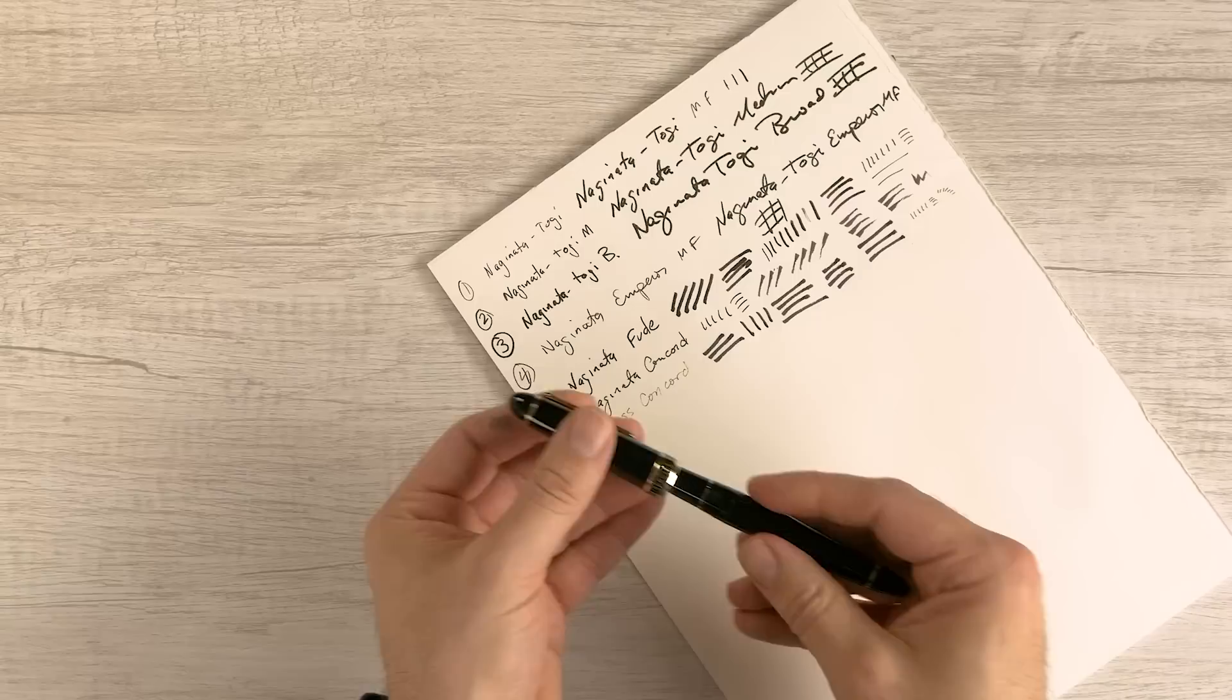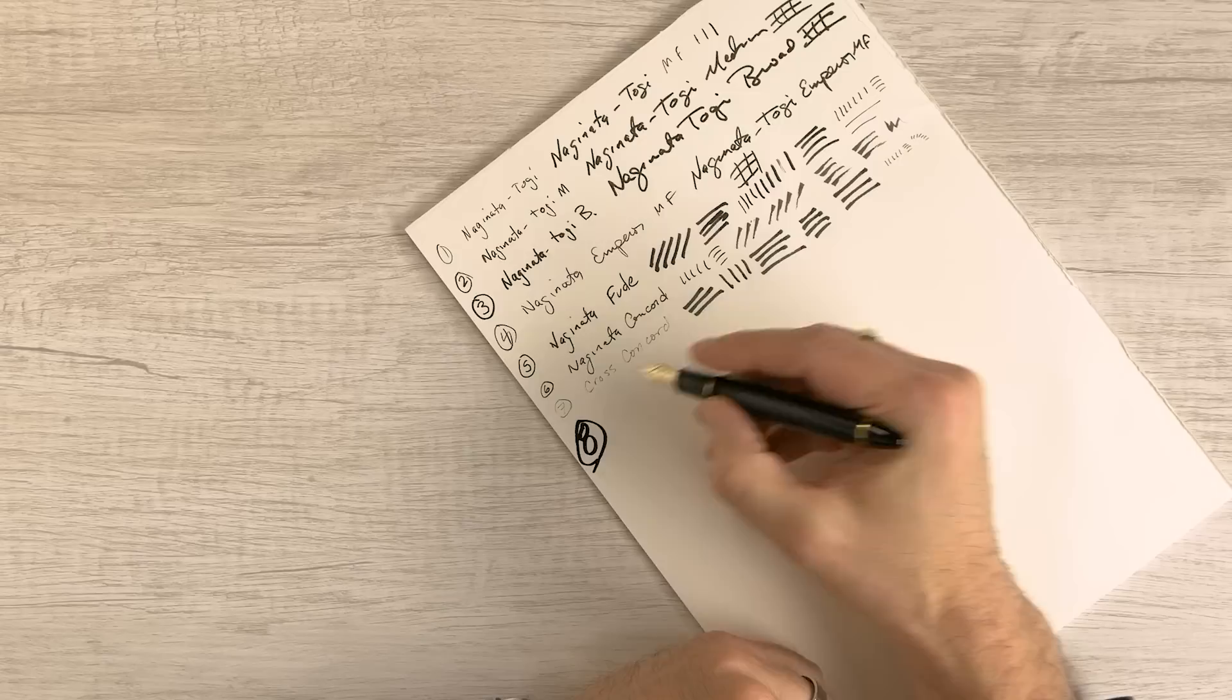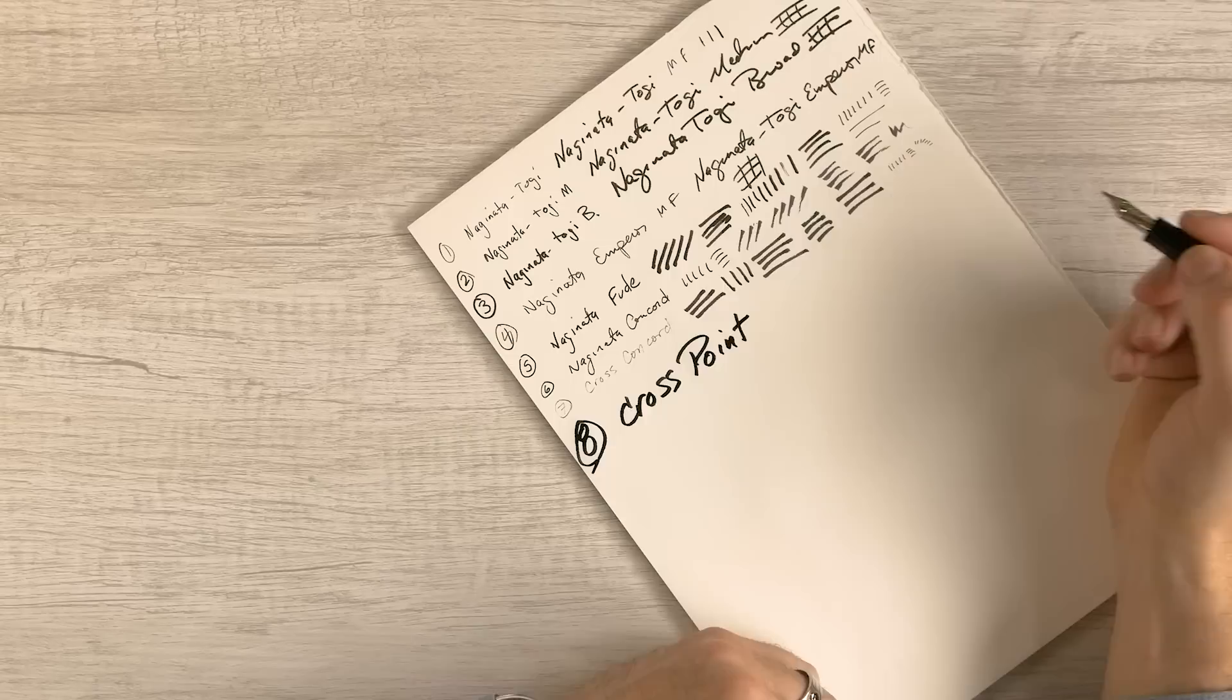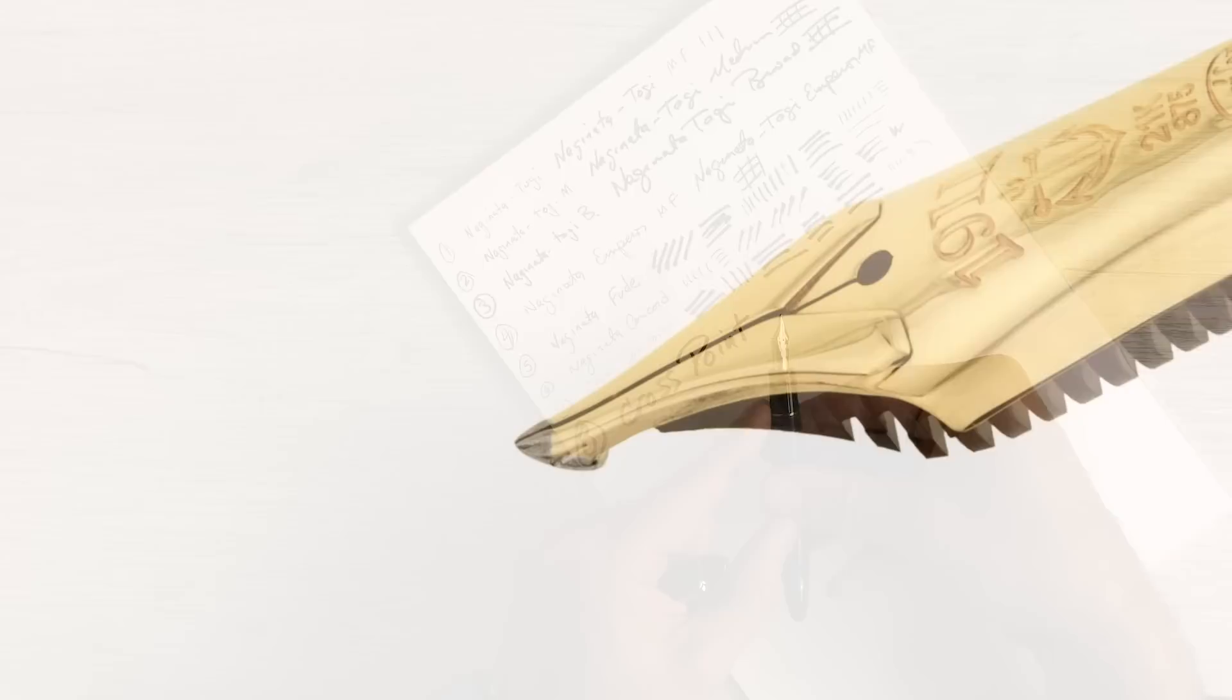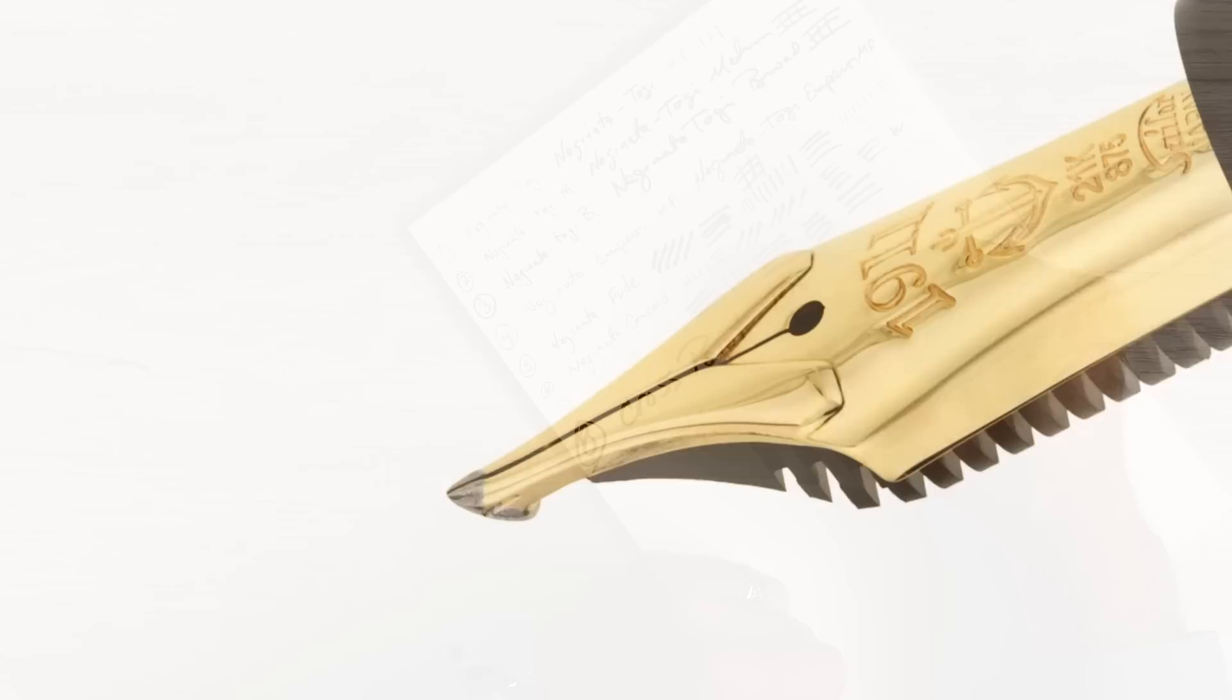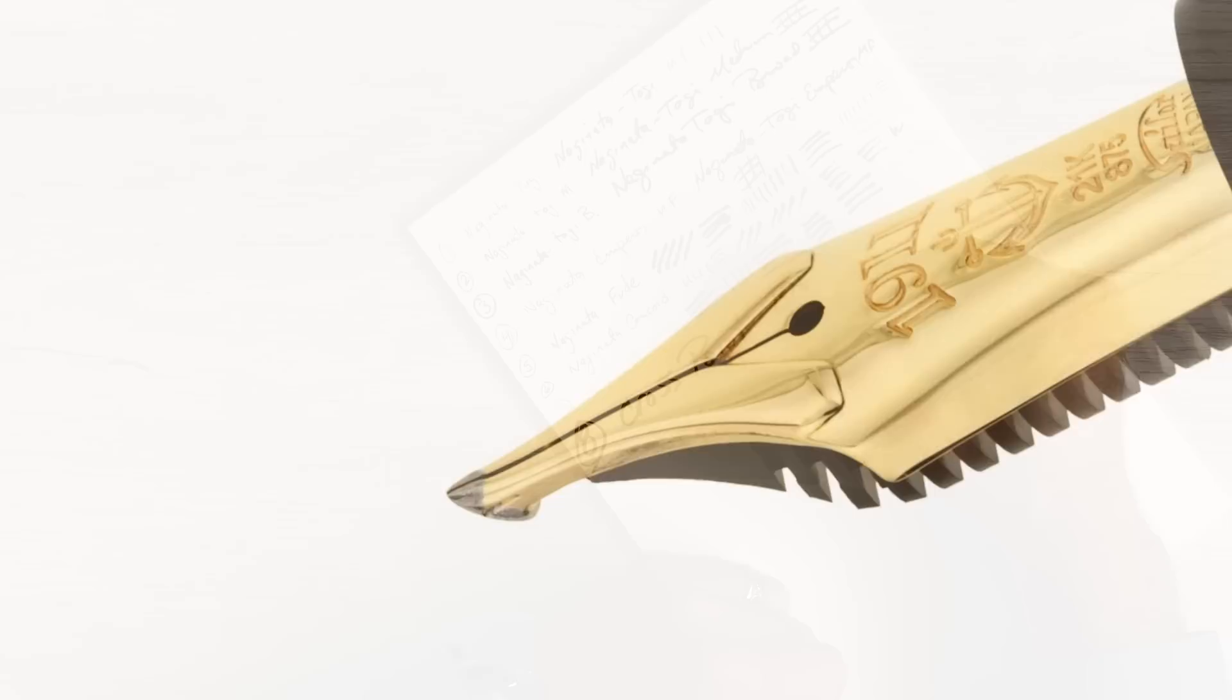Next up, the Cross Point. If you like to put a lot of ink on your page, this is the guy. Look at that. If you have an ink that's got sheen to it, this is the one you want to use for it. Again, a double layer nib. It's got a very round grind to the nib. And this just is as triple broad as you can get. And very smooth.